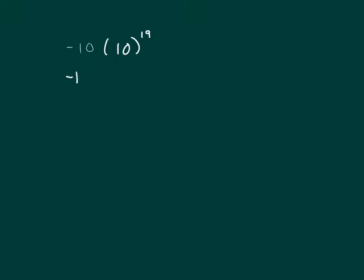Well is it negative 10, negative 1, times a 10 and then bring down the 10 to the 19th? And that's negative 1 times 10 to the 20th, because when you multiply like bases you add your exponents. So there's your answer.